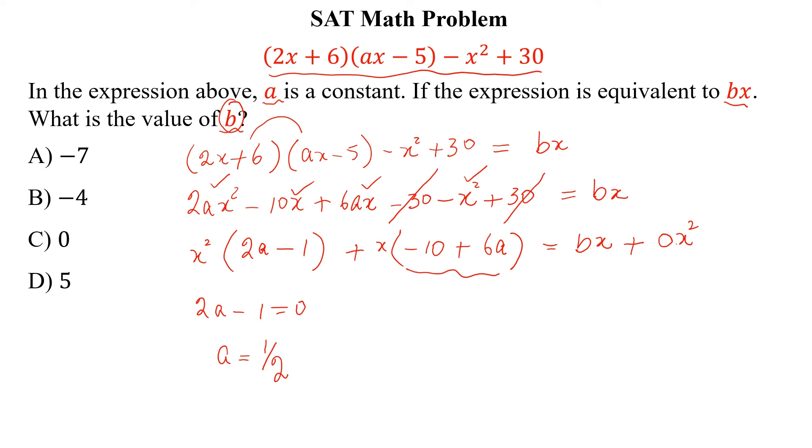So, -10 + 6A is equal to B by comparing the coefficients of x. So, A is 1/2. So, -10 + 6(1/2) is equal to B. 2 into 3, 6... -10 + 3... -7 is equal to B.